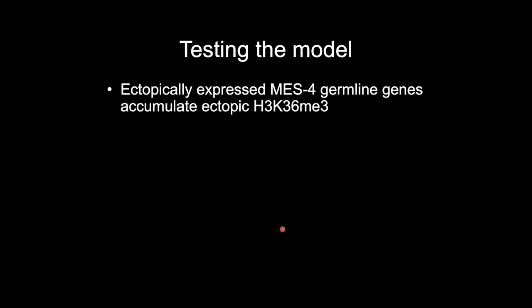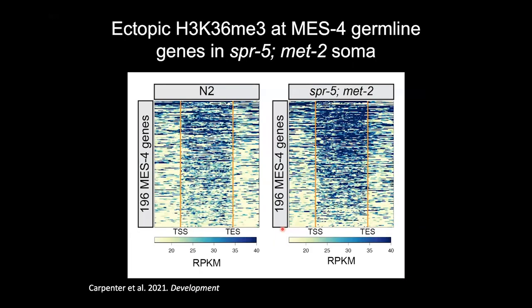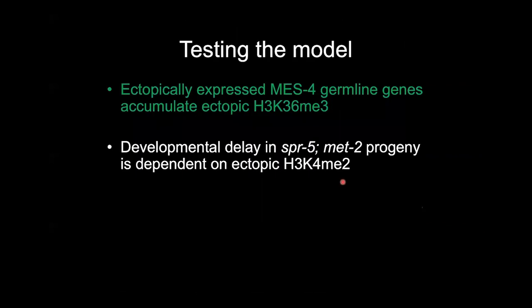This allows us to build a model. In the absence of SPR5 MET2, ectopic K4 allows MES4 to maintain H3K36 at germline genes in somatic cells. If that's the case, we should see ectopic K36 in somatic tissue of L1 larvae. We turned to ChIP-seq analysis, and looking at normalized reads per kilobase million in wild type versus SPR5 MET2 at these MES4 germline genes across gene bodies, we see ectopic K36 in SPR5 MET2 progeny — while wild type has some H3K36 there, it's not enough to cause ectopic expression, as shown by our single-molecule FISH data.